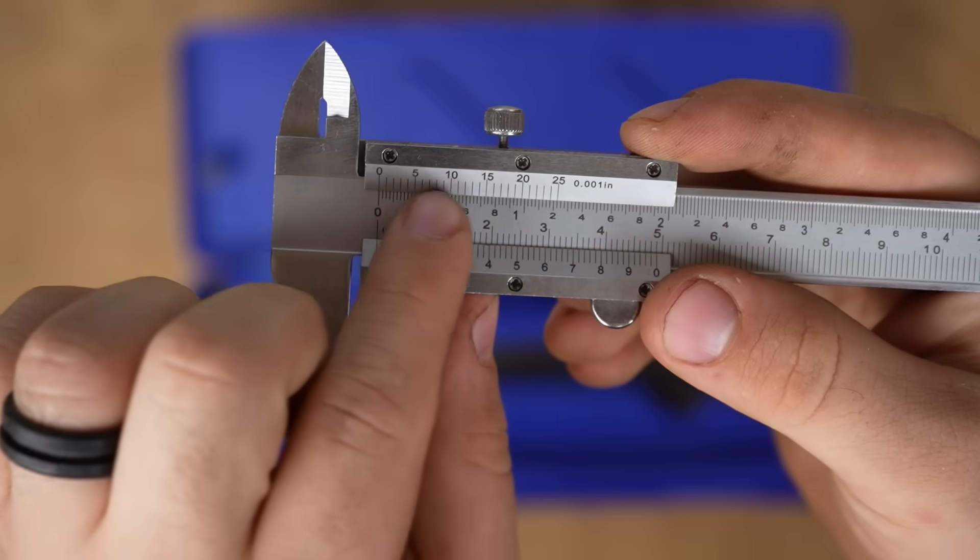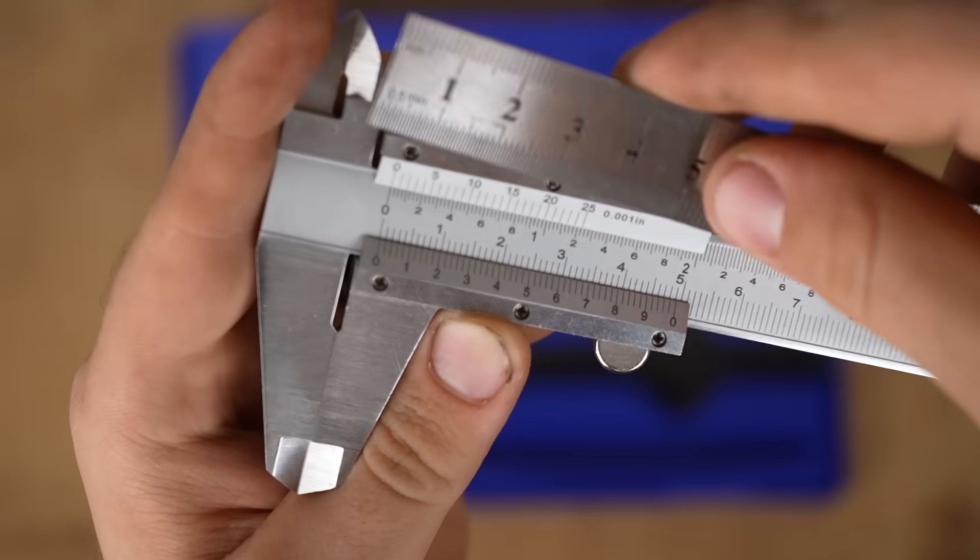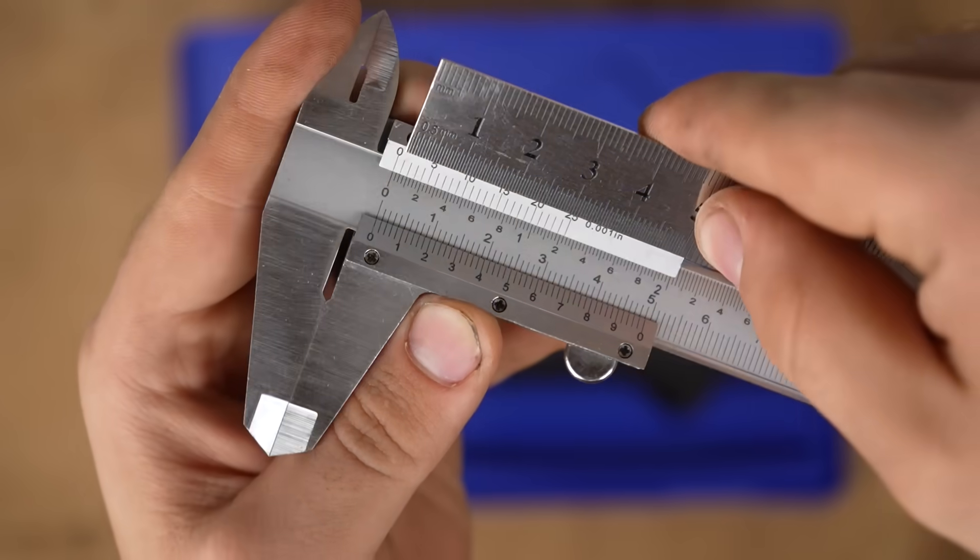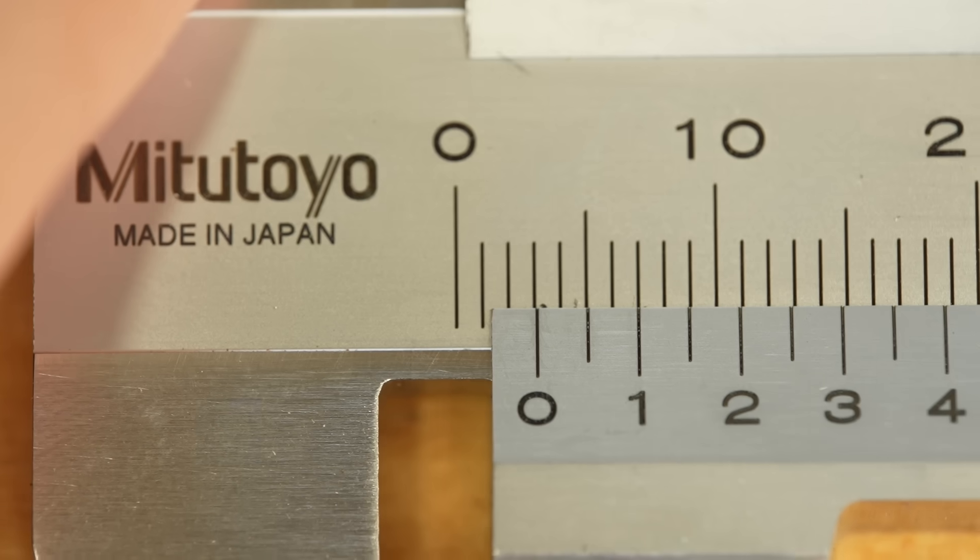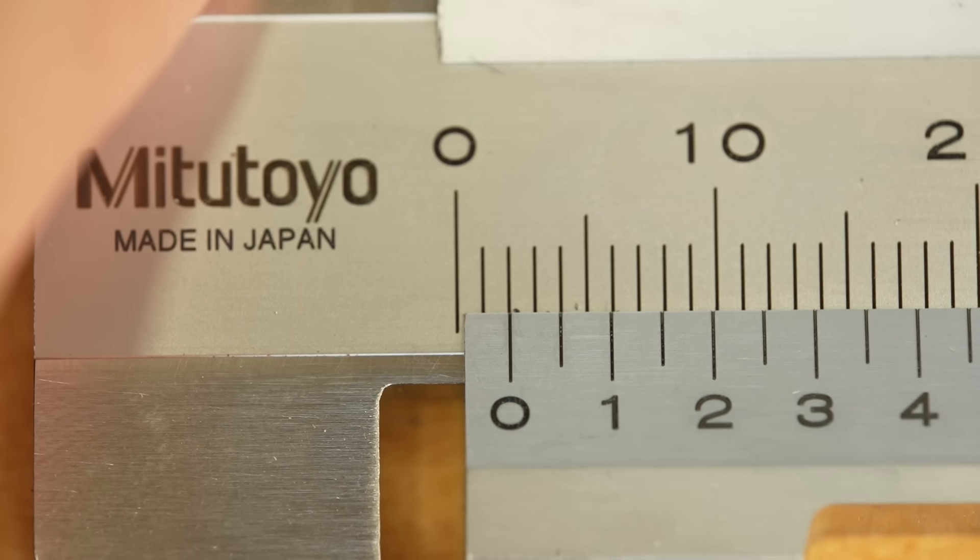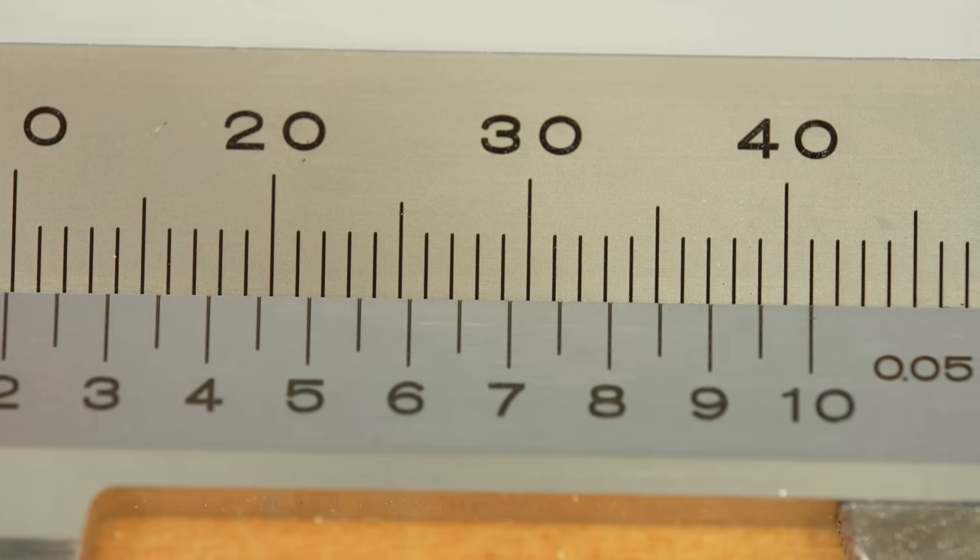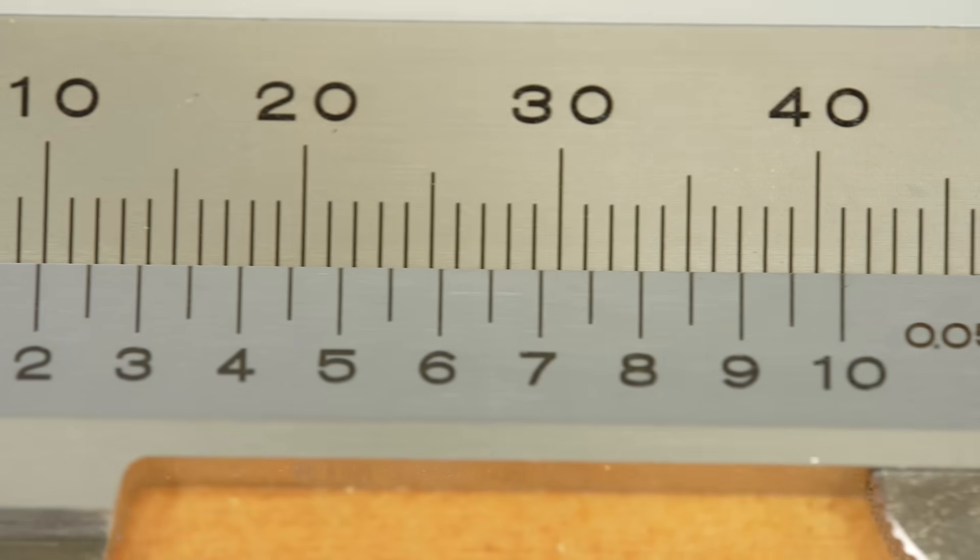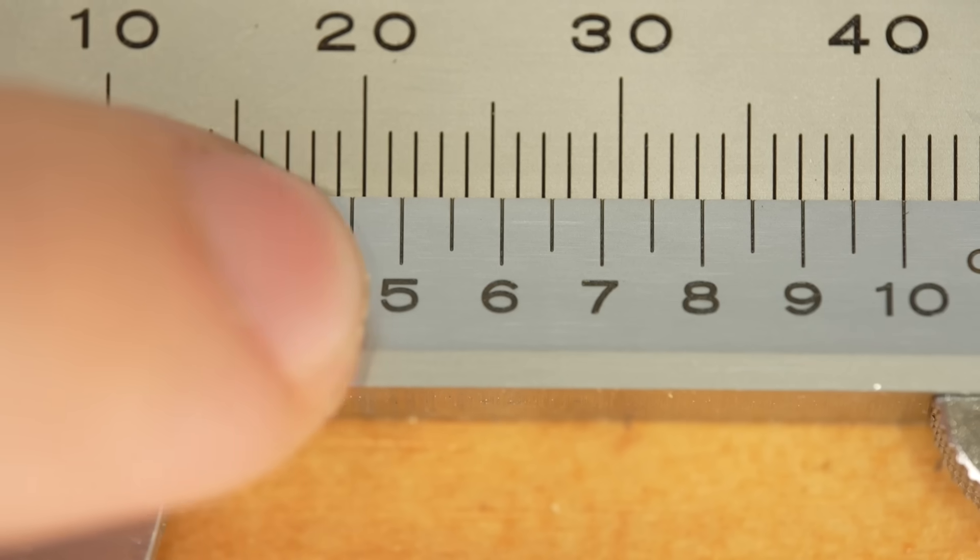At first glance, this scale on the calipers may just seem like another ruler or way to measure outwards, though that doesn't make sense once we take a closer look. If we line up the 0 with a 2 for example, the lines won't coincide at any point throughout the centimeter scale or inch scale, and this is intentional and how the scale works to begin with.